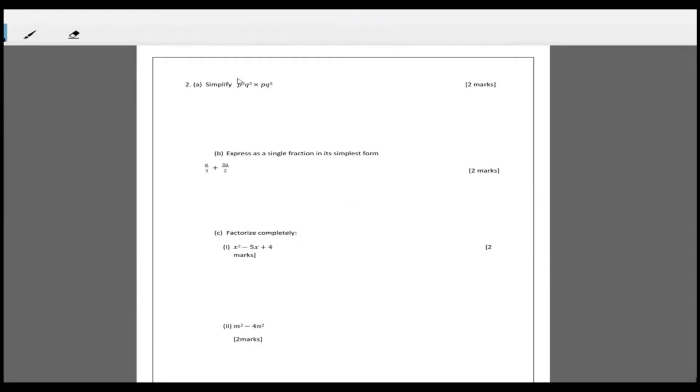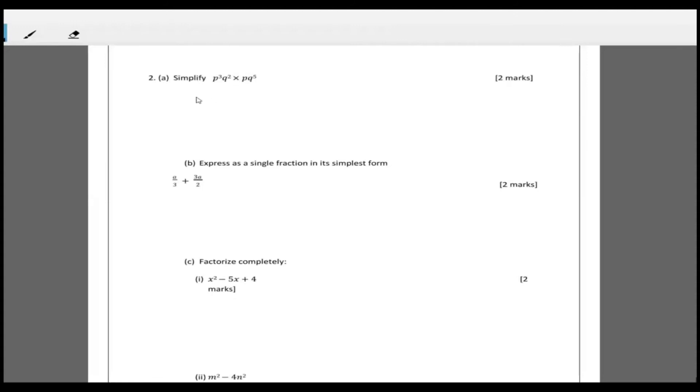We have p cubed q squared times p times q to the fifth. Now when you're multiplying these with lots of indices, when the bases are the same we add the powers. So this becomes p cubed times p is p to the four, and then q squared times q to the fifth - we add the powers to get q to the seven. Two plus five is seven, and so that's two marks.